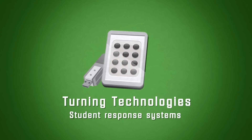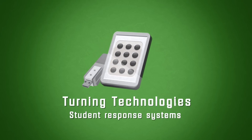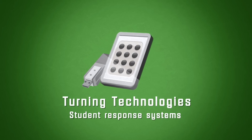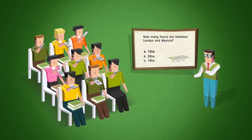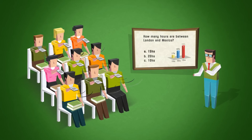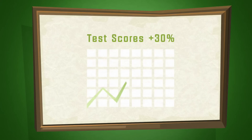According to independent research, using student response systems in the classroom can improve student achievement and test scores by 15 to 30 percent or more.